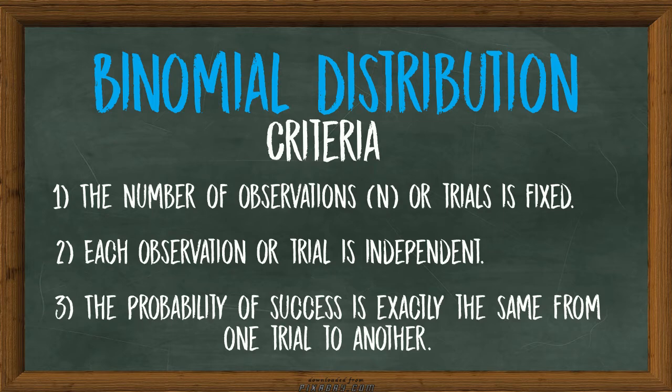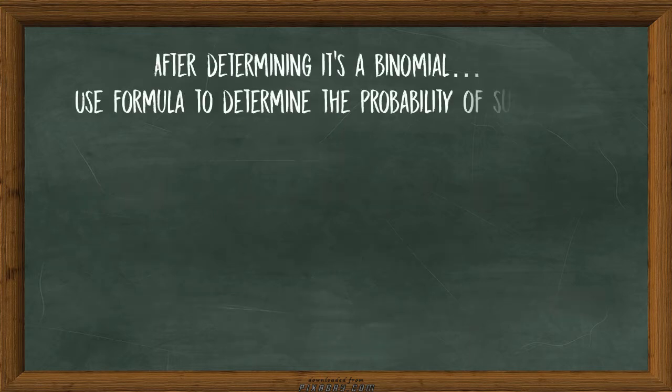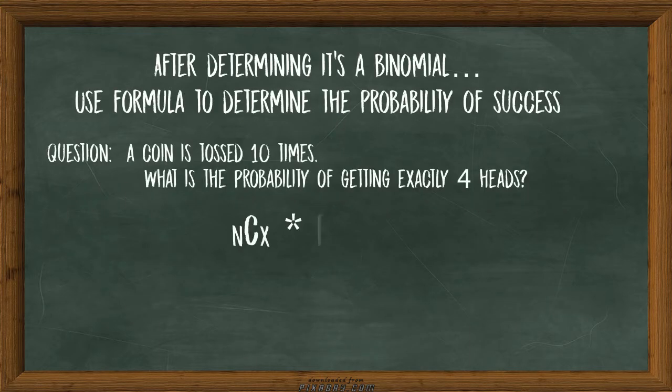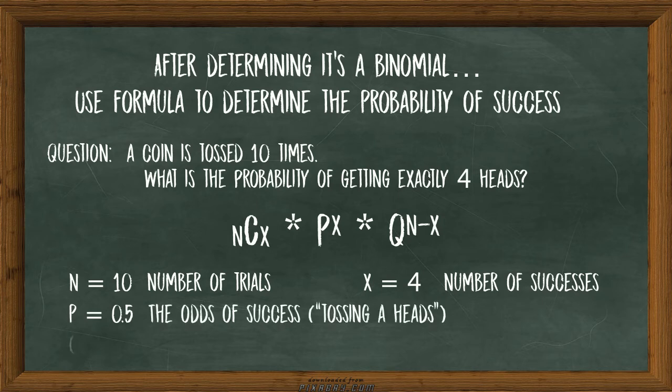After determining if it's a binomial, you can use a formula to determine the probability of success. So for the question: a coin is tossed ten times, what is the probability of getting exactly four heads?